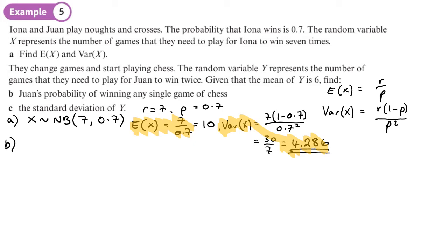Let's start with the notation. Y is negative binomial. For him, it's about winning two games, so two successes, but we don't know his probability of winning. We know that the mean is six, so we can just use the formula. We know that E(Y) equals six.